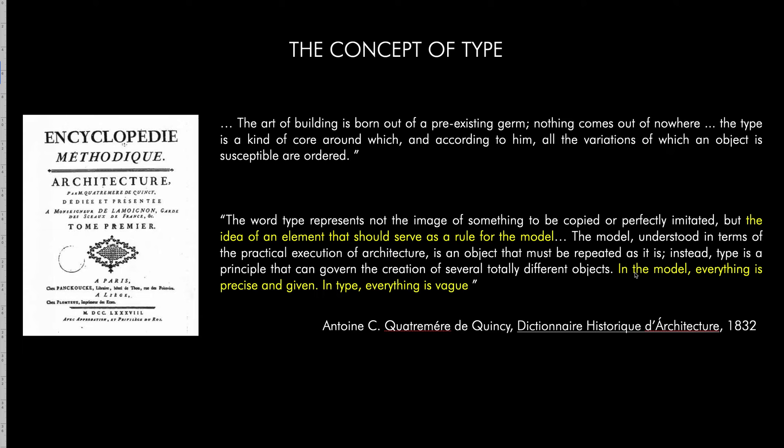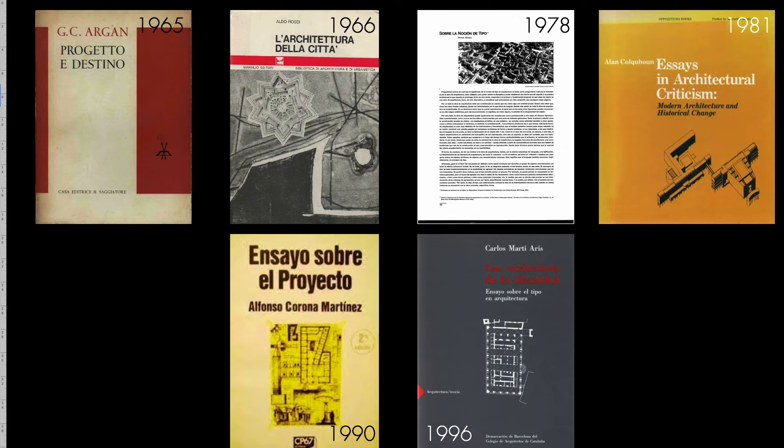In the model, everything is precise and given. In type, everything is vague. Perhaps a good way of trying to understand the concept of type is to look at things outside architecture and then come back to architecture. But before that, let me show you by whom the concept of type was recovered in the 20th century.